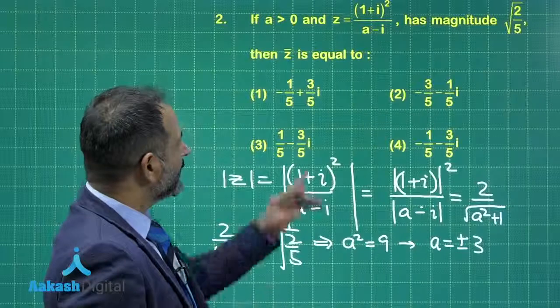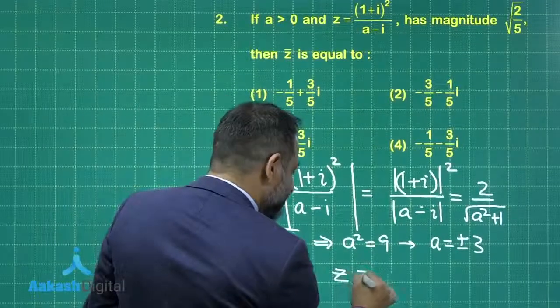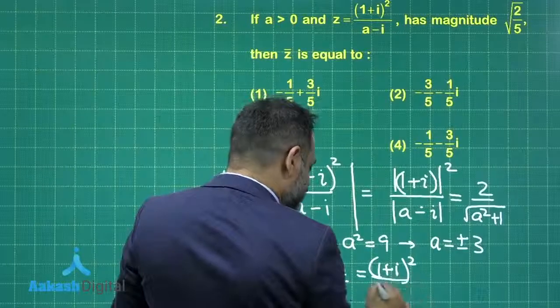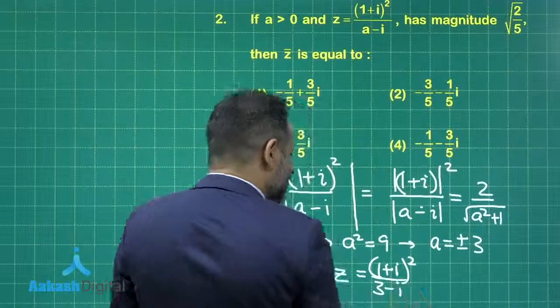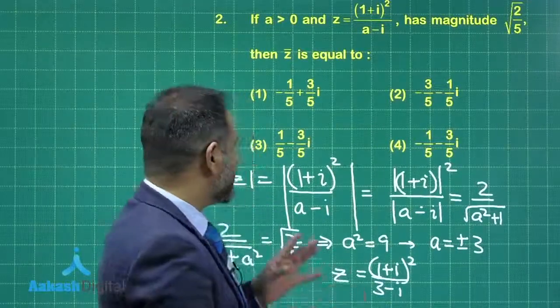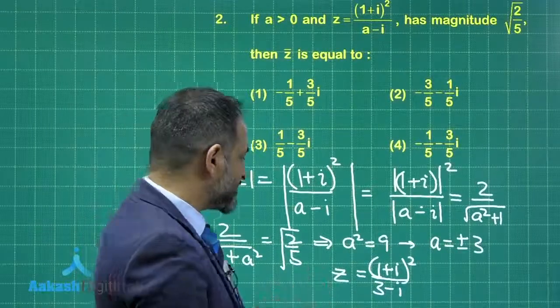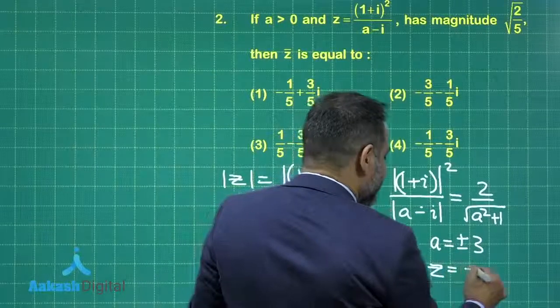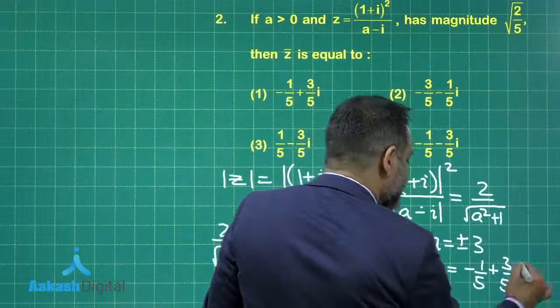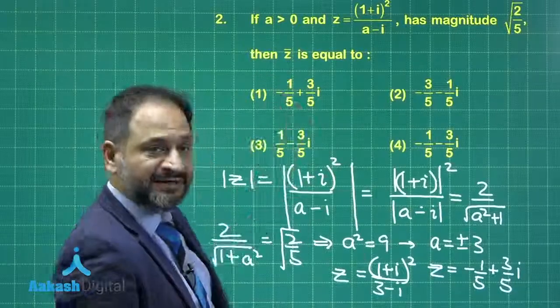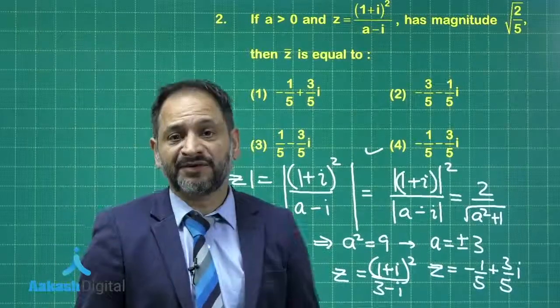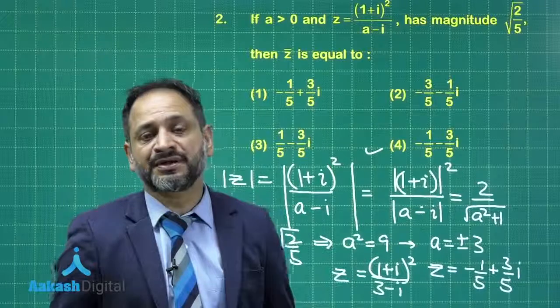From here we can calculate z which is equal to 1 plus iota whole square upon a minus iota, that is 3 minus iota. If you expand this and rationalize this, you will get the required complex number, and that complex number is z is equal to minus 1 by 5 plus 3 by 5 iota. So the conjugate of z definitely will be the fourth option here, that is minus 1 by 5 minus 3 by 5 iota. So again we are going to the next problem.